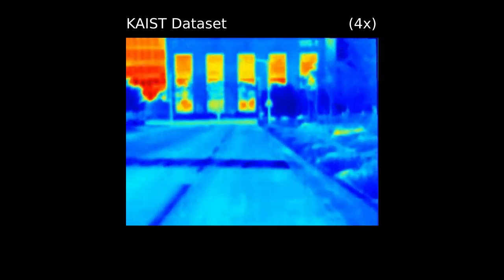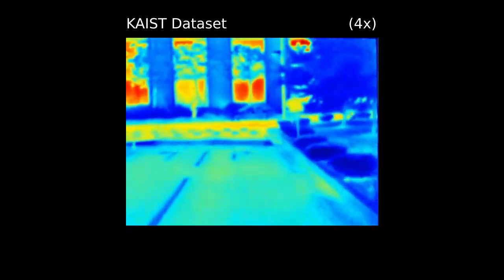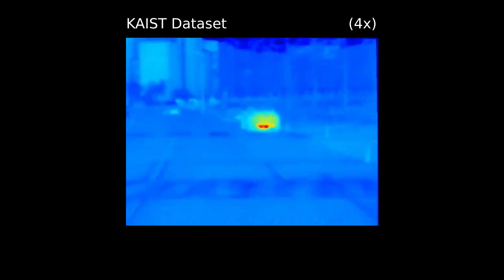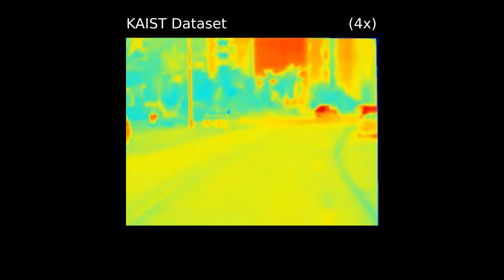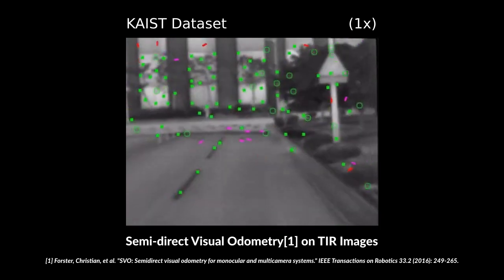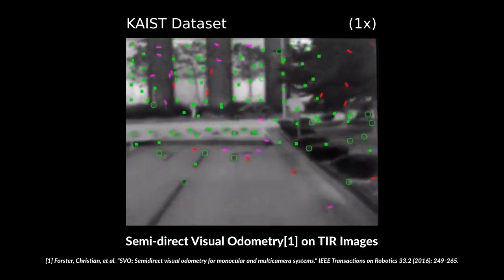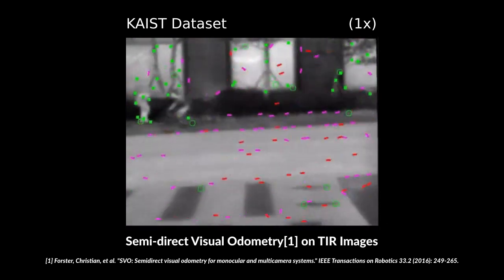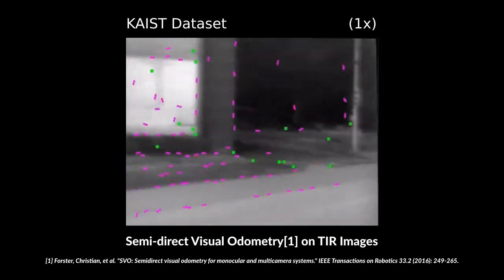However, commercial off-the-shelf thermal cameras introduce photometric errors. Notice how the appearance of any object changes over time as the video progresses. This makes them unusable with standard computer vision algorithms, as you can see that feature tracking fails here.